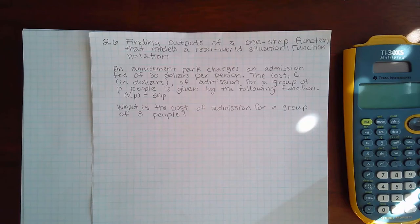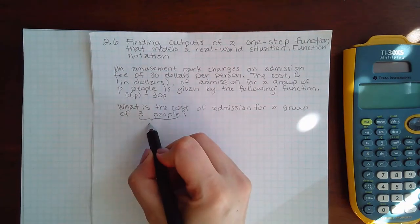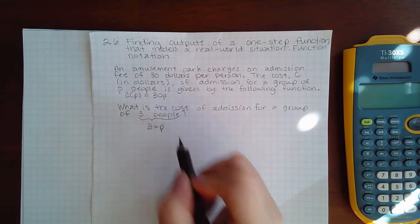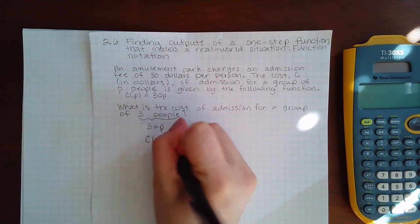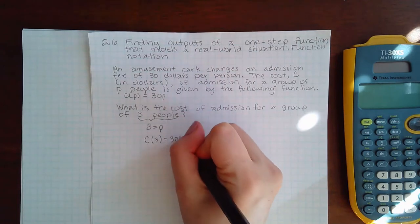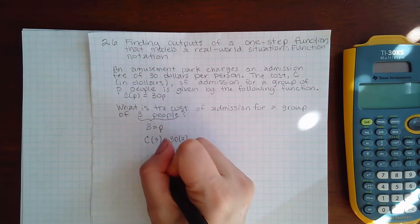What is the cost of admission for a group of three people? Since it says three people, that means 3 equals the P value. So we're going to find C(3), and that would be 30 times 3, which is 90. Remember,